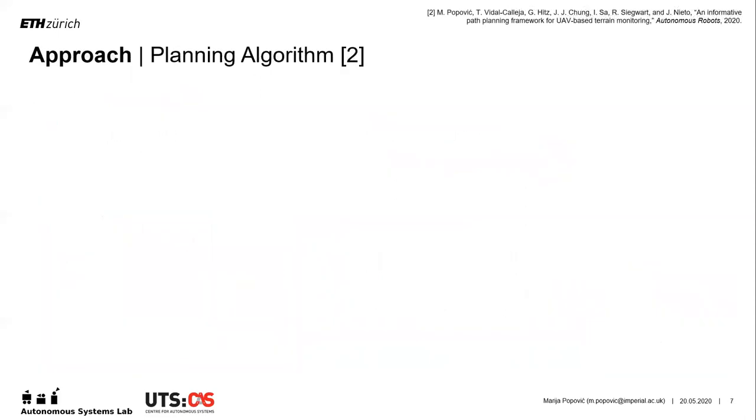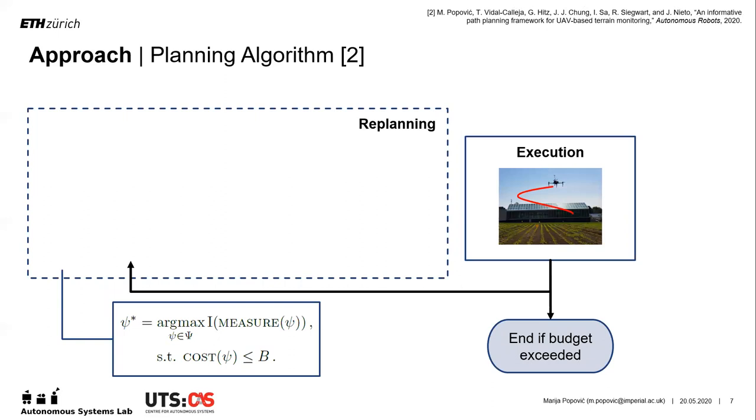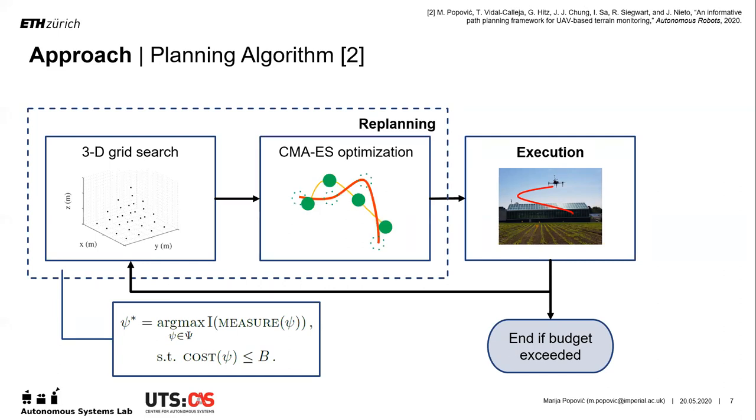Putting together our ideas in mapping and planning, our planning algorithm works as follows. It operates in a finite horizon manner, alternating between replanning and plan execution online until a specific budget is exceeded. Each new plan is a smooth polynomial trajectory defined by a fixed number of points. The replanning procedure involves two steps. First, the initial trajectory is obtained by performing a sequential search over a 3D grid in the robot workspace. Then, this solution is refined using the CMA-ES, an evolutionary optimization routine.